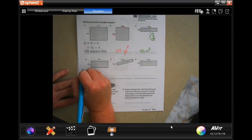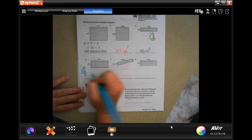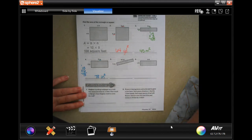Okay, 13 by six. Six times three is 18, carry the one. Six times one is six, plus one is seven. 78 inches, inches by inches, inches squared.